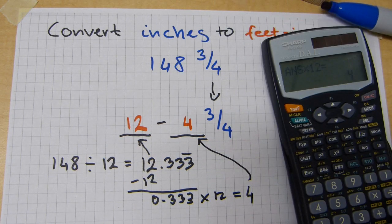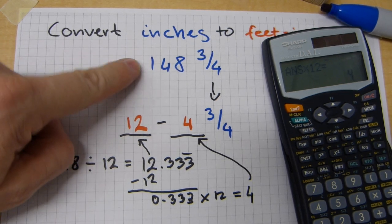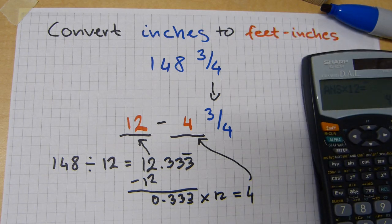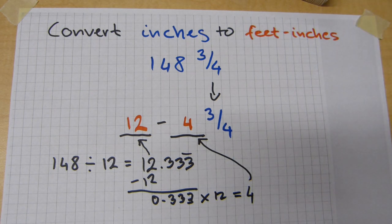148 inches is 12 feet and 4 inches. Let me repeat these steps quickly on a different number without writing every step down. Just doing it on a calculator.